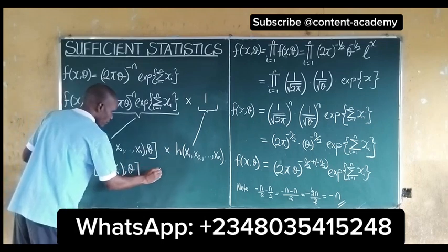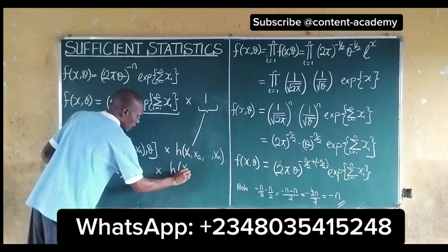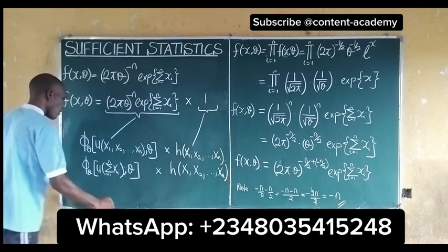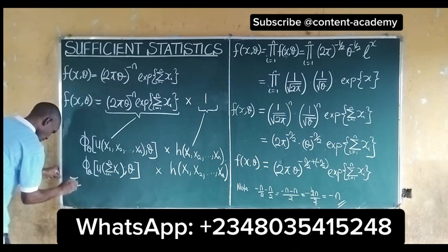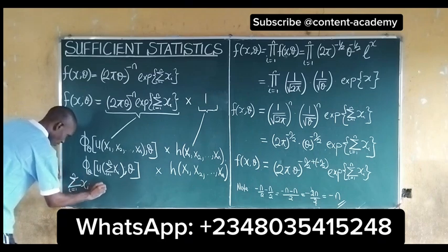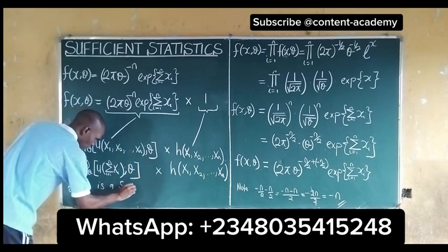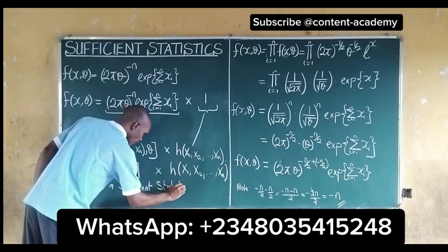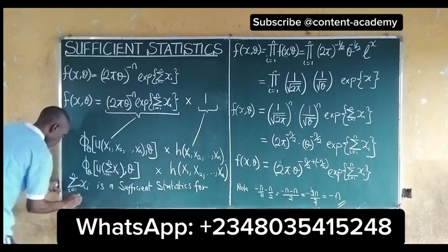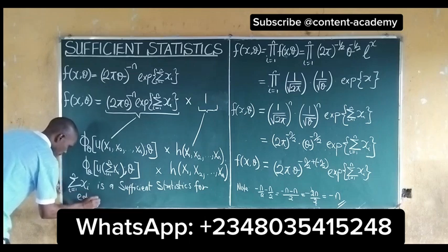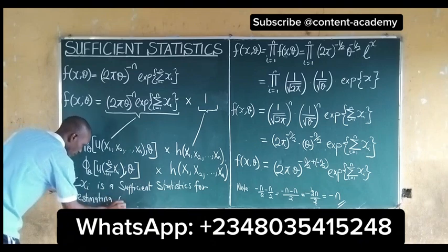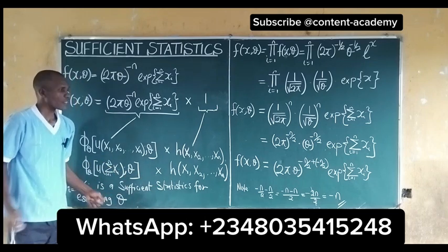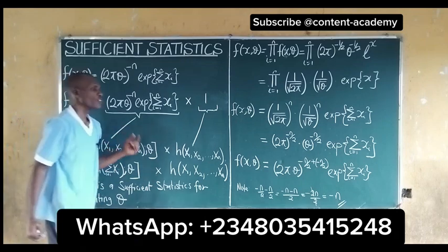The mean is a sufficient statistic for estimating theta. Of course, the summation of xi is a sufficient statistic for estimating theta. So this is how we can compute the sufficient statistics for the distribution given.